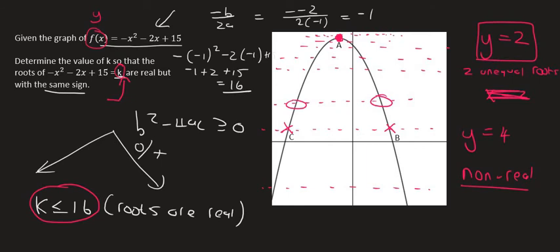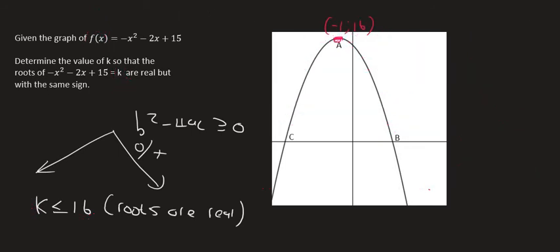So y cannot be anything more than 16. Otherwise, the roots are non-real, meaning that they don't exist. Now what we can do is we can look at their part where they say are real but with the same sign. So for example, if I draw a line going across here, this root will be negative because it's got a negative x value. This one is positive. If I go over here, this one is negative and this one is positive. So we're looking for that small little area where both of them would have the same sign.